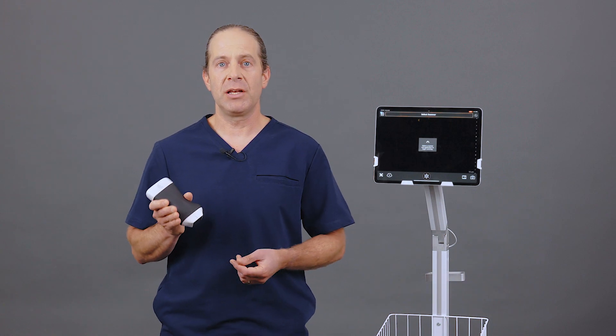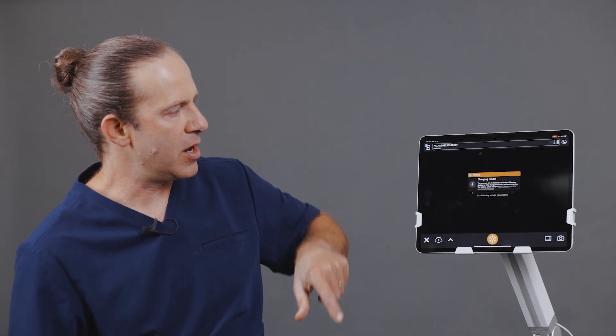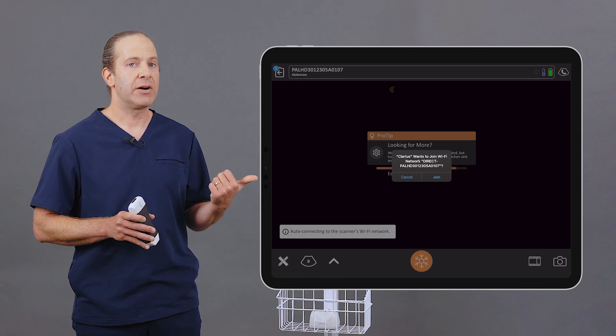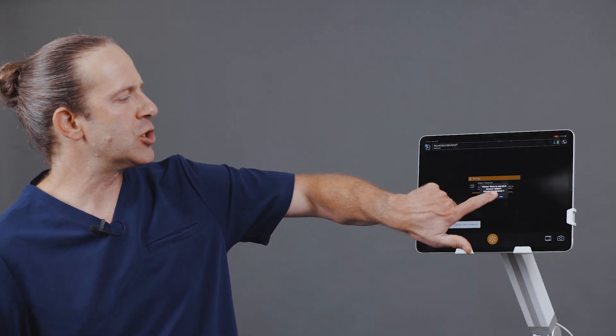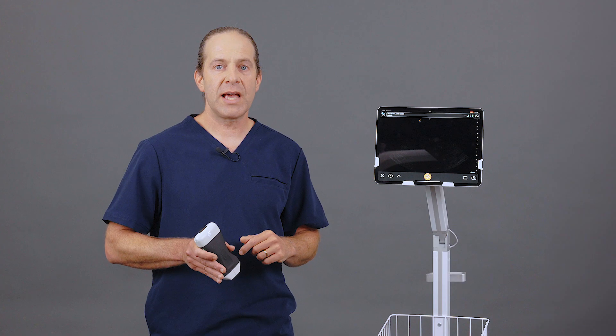The first step in using the scanner is to sync it with the app. You'll go to Select Scanner and power it up. This creates a direct Wi-Fi connection between the scanner and the Clarius app. Make sure to click Join and that will complete the connection.